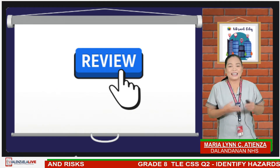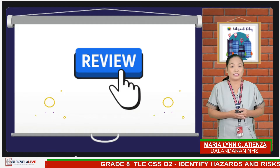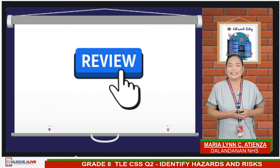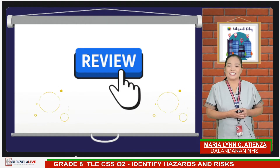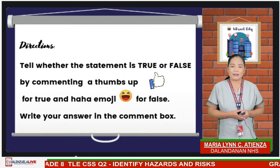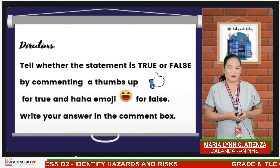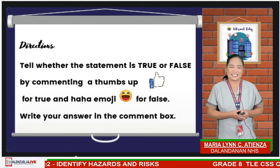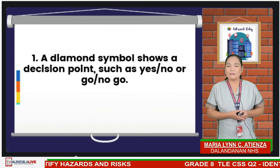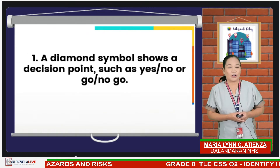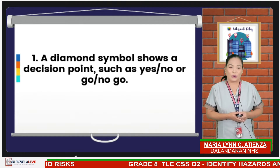Now let's have a glimpse of what we had last time. Can you still remember the topic we discussed last week? Put in the comment box a thumbs up if the statement is true and a ha-ha emoji if false. Number 1: a diamond shows a decision point, such as yes, no, or go, no-go.